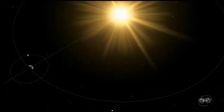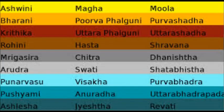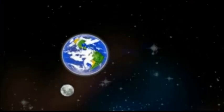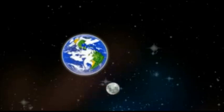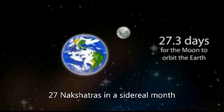Astronomy teaches us that the moon takes 27.3 days to orbit the Earth. Every day the moon is seen in a different segment of the sky, and on the 28th day it is seen back in the starting segment. 27 nakshatras provide the closest whole number approximation to the moon's orbital period. A peculiar aspect of Vedic astronomy is the idea of dealing with decimals and fractions by simplifying it to a problem involving whole numbers.